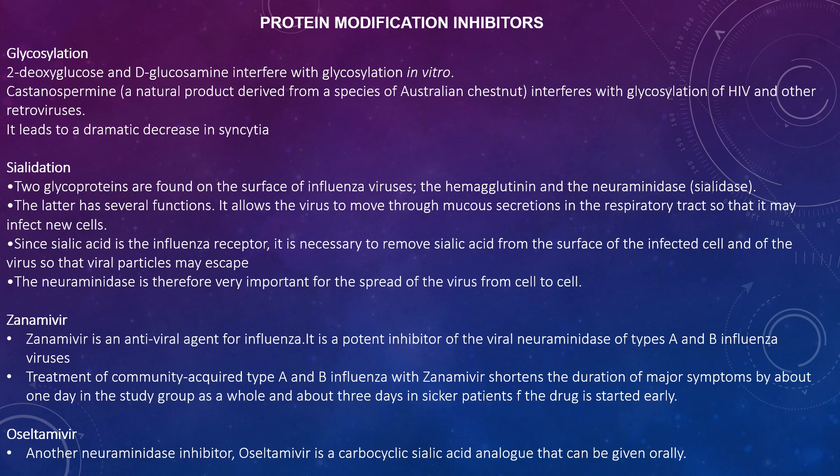Regarding sialylation: two glycoproteins are found on the surface of influenza viruses — the haemagglutinin and the neuraminidase (sialidase). The neuraminidase has several functions that allow the virus to move through mucus secretions in the respiratory tract to infect new cells. Since sialic acid is an influenza receptor, it is necessary to remove sialic acid from the surface of an infected cell and of the virus so that viral particles may escape. The neuraminidase is therefore very important for the spread of the virus from cell to cell. Looking at two types of drugs: Zanamivir is an antiviral agent for influenza. It is a potent inhibitor of the viral neuraminidase of influenza types A and B and is used for the treatment of community-acquired type A and B influenza. Zanamivir shortens the duration of major symptoms by about one day, and by three days in severely affected patients.